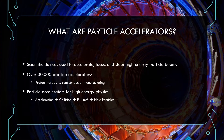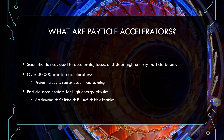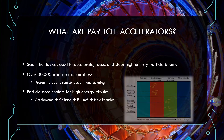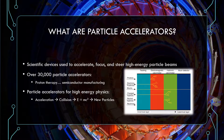Inside a particle accelerator, two high-energy beams of particles are accelerated in opposite directions and passed right through each other. A lot of the particles miss each other, but some collide, and the collision energy is converted into the mass of new particles through E equals mc squared. These particles are then detected and analyzed by particle detectors within the accelerator.